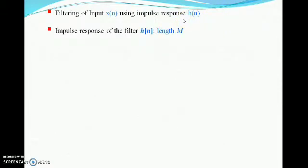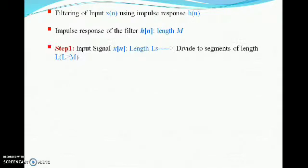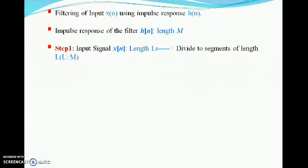I am going to filter my x(n), which is a long duration sequence, and the impulse response I am going to take as h(n). The impulse response has a length of M, and this indicates that the impulse response is a response of a finite FIR filter, that is finite impulse response filter. Step one: I am going to take my original signal x(n) which has a length of Ls, divide the original signal into segments of length L, and the criteria for choosing L is L should be greater than or equal to M.